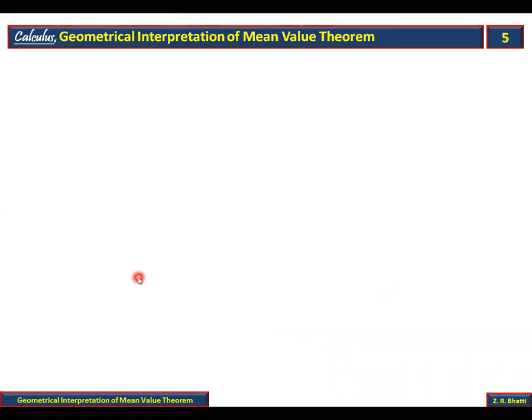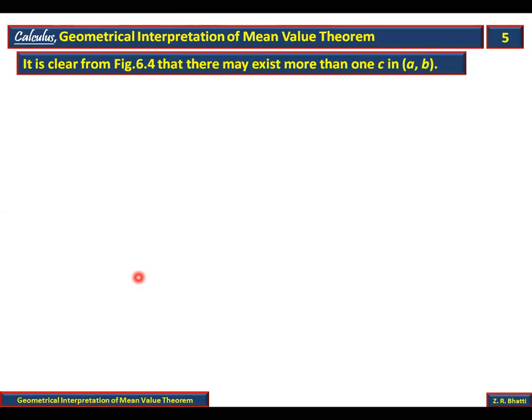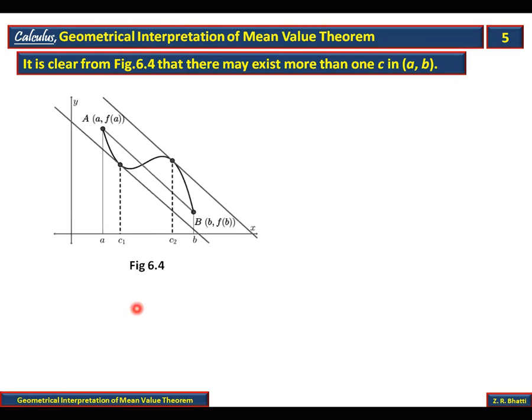It is clear from Figure 6.4 that there may exist more than one point C in the interval (a, b).